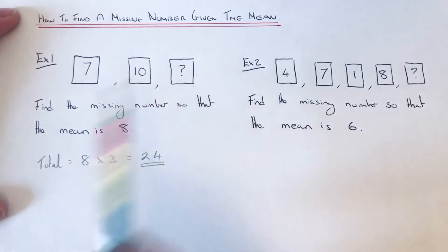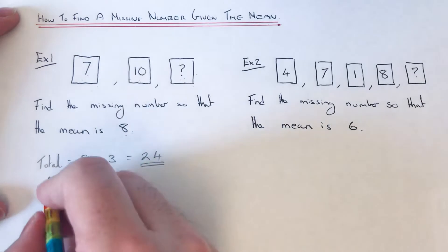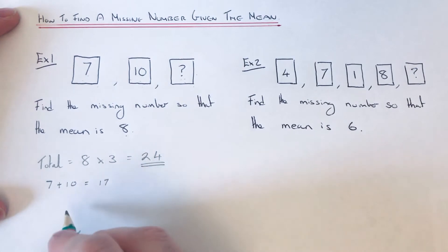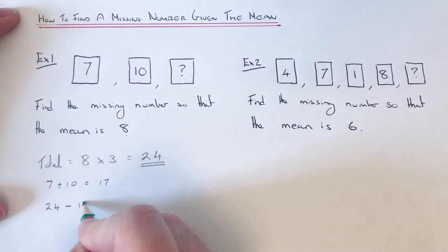So these three numbers add up to 24. The next thing we can do is add up the 7 and the 10 which is 17. Then we can take that answer off the 24. So 24 take away 17 is 7.